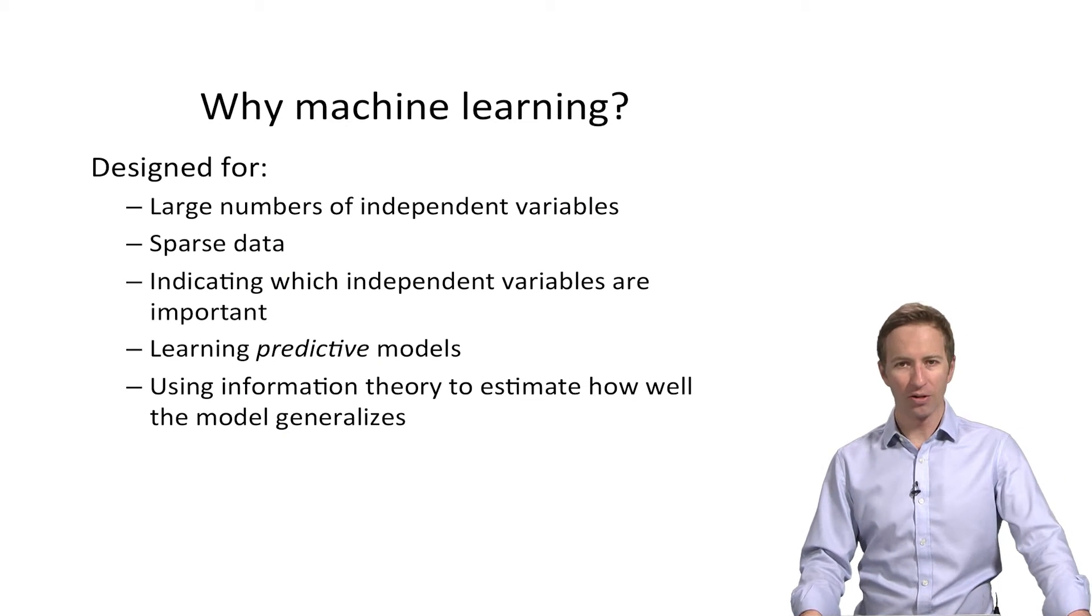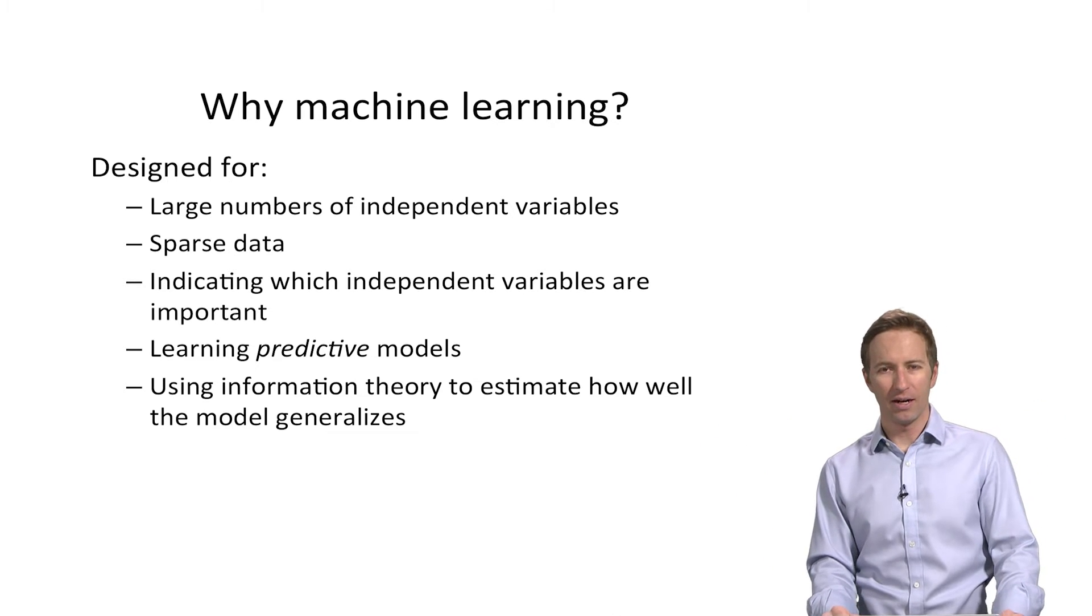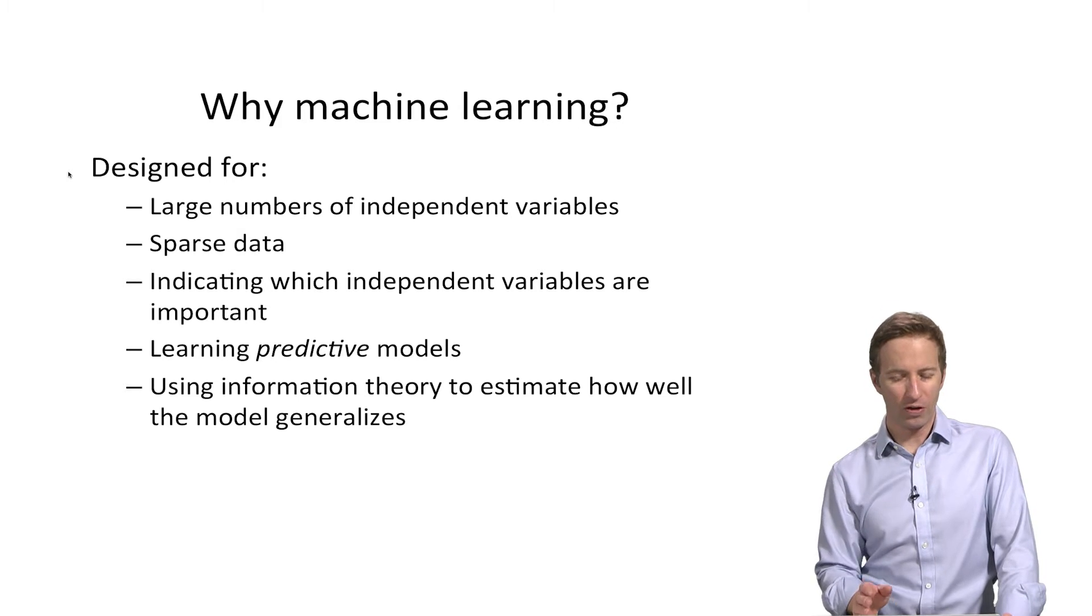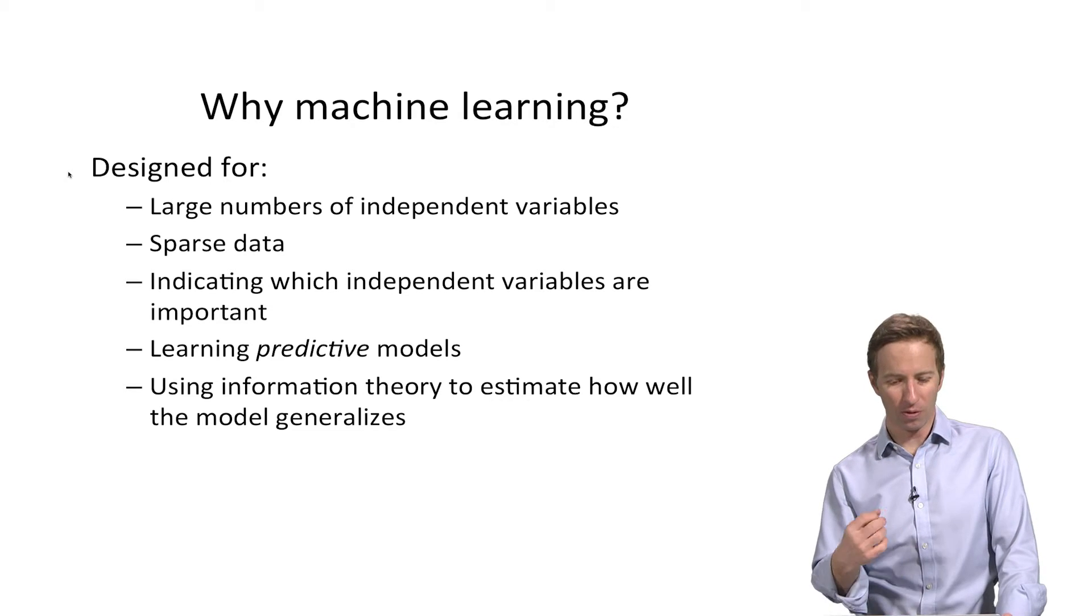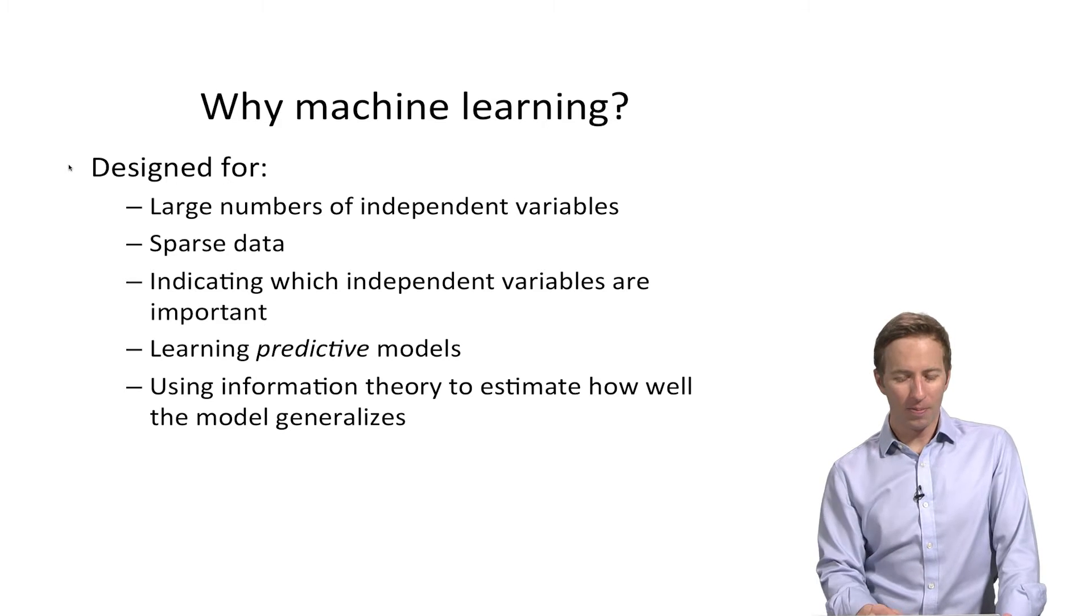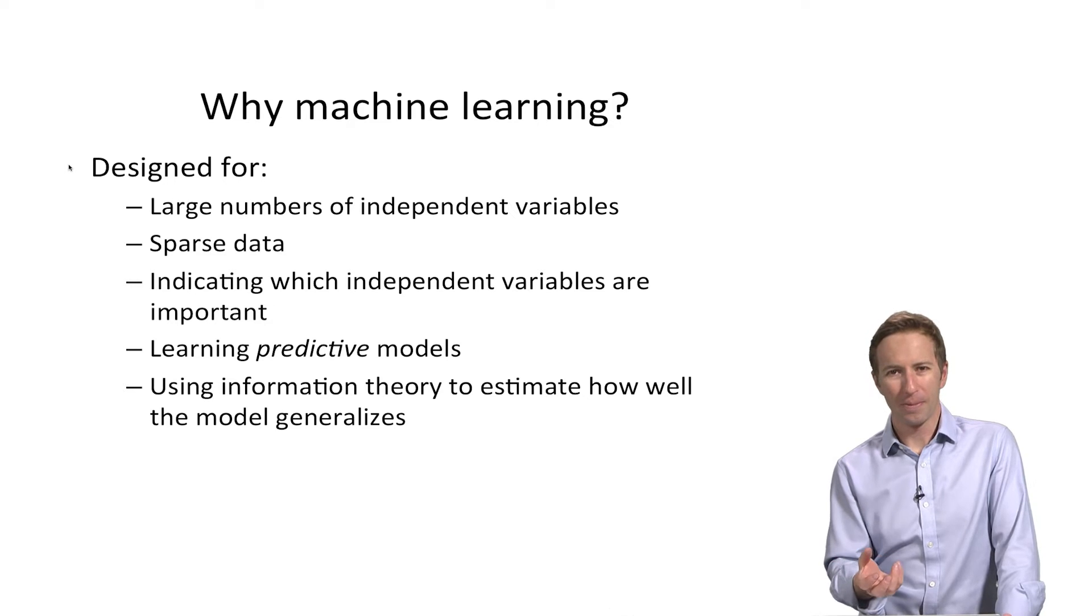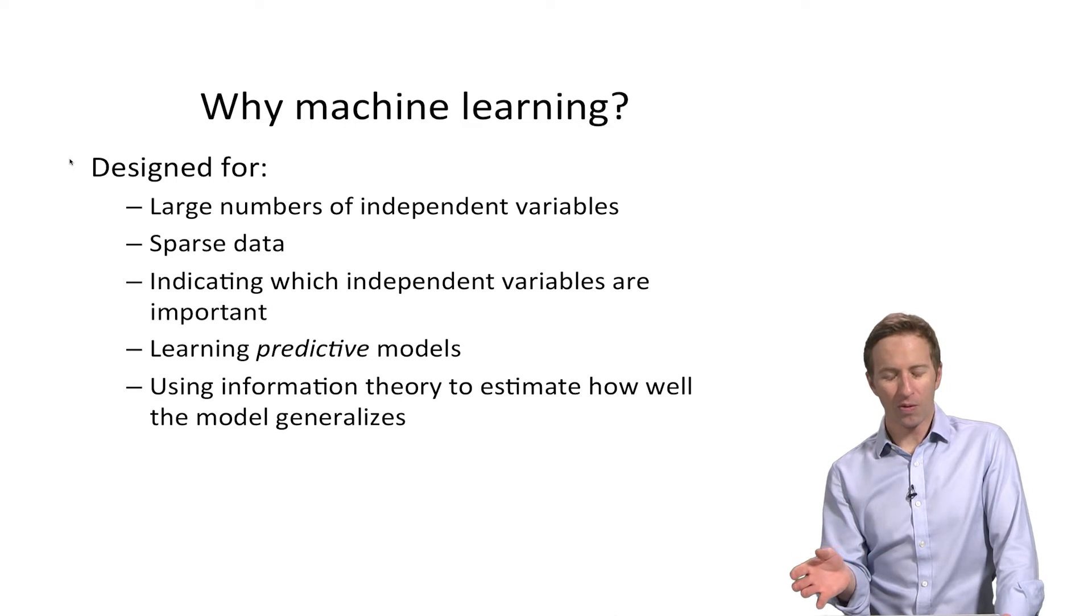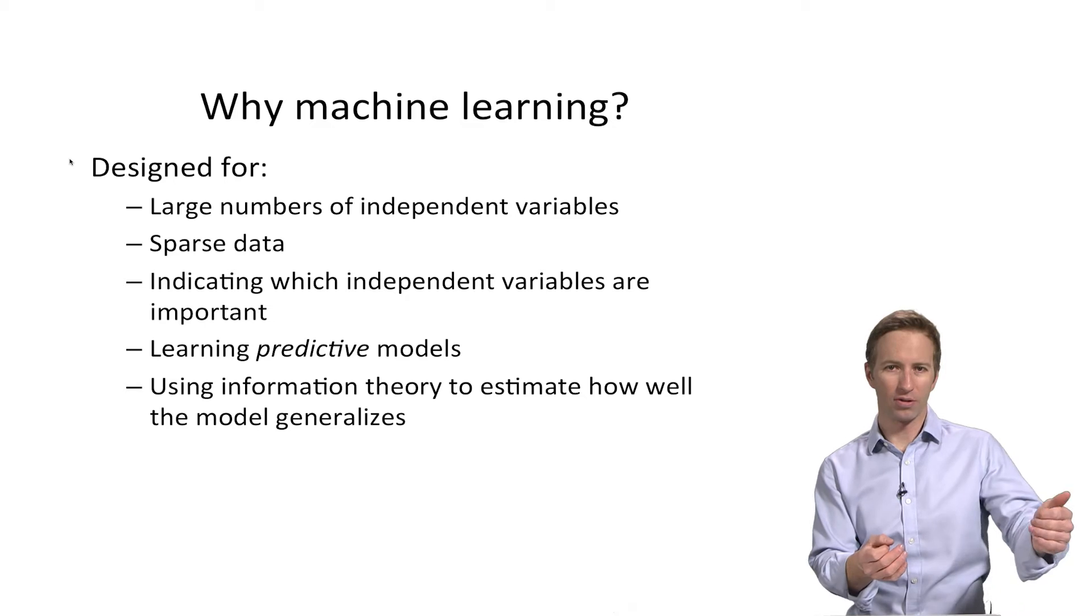So why are we using machine learning? Machine learning is designed to handle large numbers of independent variables so it can handle that high dimensionality. It can handle sparse data and it's often geared toward figuring out which of those many independent variables are actually important for doing prediction. The purpose of machine learning is usually to build a predictive model at least for supervised learning and so in a clinical setting that's often what we want to do. And in machine learning we're also using information theory to estimate how well the model will generalize to future data.